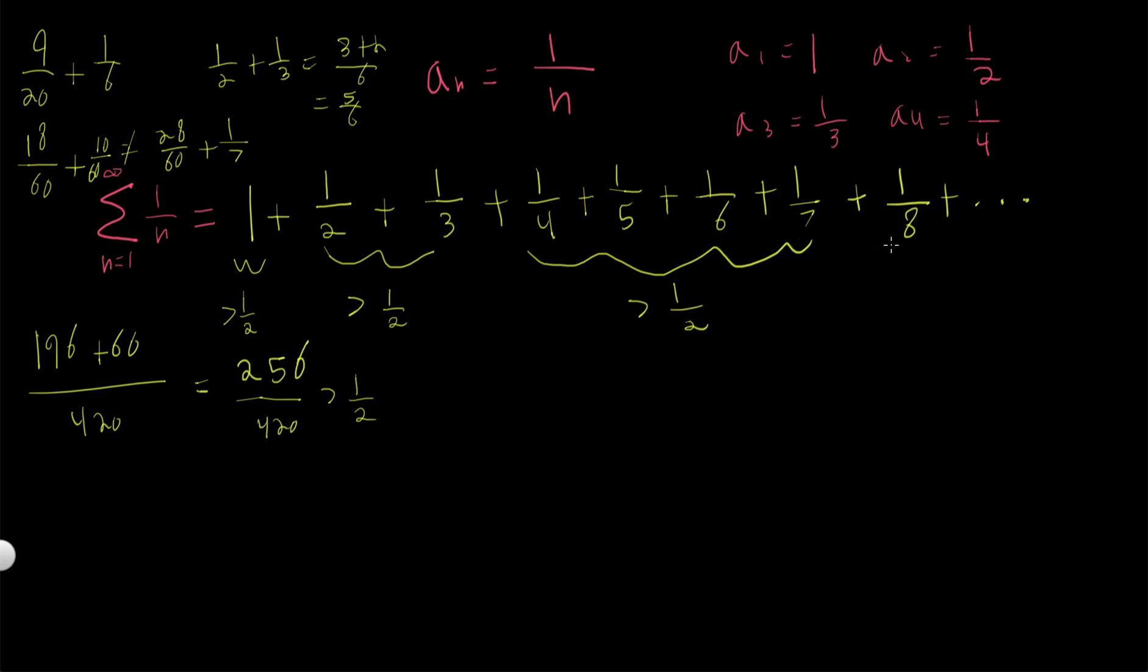So if we keep going, if we keep adding more numbers, it seems like if we keep adding more numbers, we can just keep getting a summation that is greater than 1 half, right?